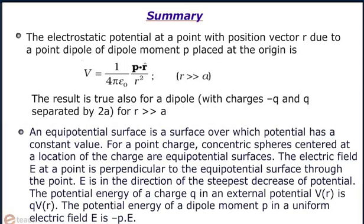An equipotential surface is a surface over which potential has a constant value. For a point charge, concentric spheres centered at the location of the charge are equipotential surfaces. The electric field E at a point is perpendicular to the equipotential surface through the point. E is in the direction of the steepest decrease of potential.